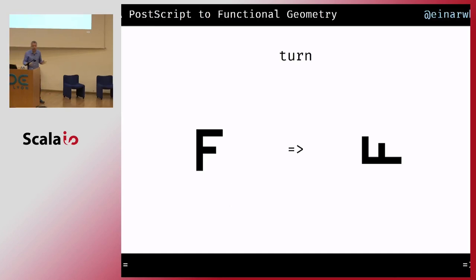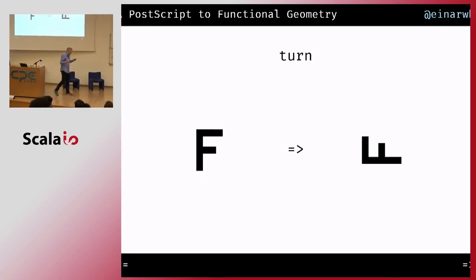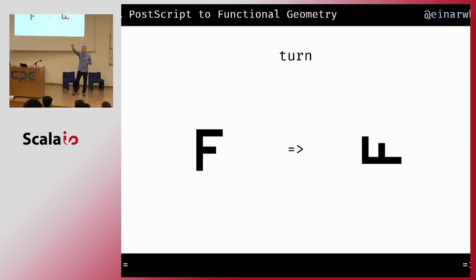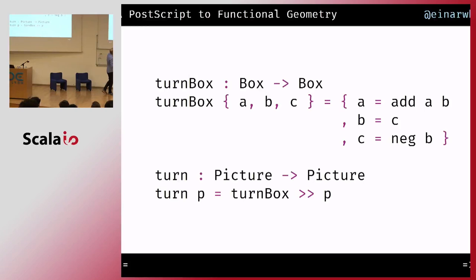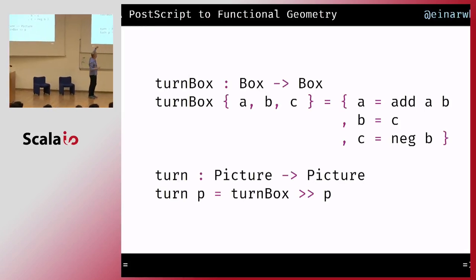This gives us an easy way to do simple transformations on pictures. For instance, we might want to take a picture and turn it 90 degrees, and we can do that just by manipulating these boxes. So I have a function turn-box that does a little bit of simple vector arithmetic, and we can use that to implement a turn function.